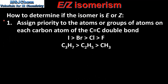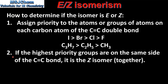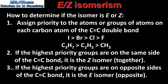Let's end with a summary. The first step to determine if an isomer is E or Z is to assign priority to the atoms or groups of atoms on each carbon atom of the carbon-to-carbon double bond. The order of priority for the halogens is: iodine with the highest atomic number and fluorine with the lowest. For a hydrocarbon chain, C₃H₇ has the highest priority and CH₃ has the lowest. If the highest priority groups are on the same side of the double bond it is the Z isomer; if on opposite sides it is the E isomer.